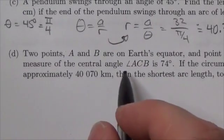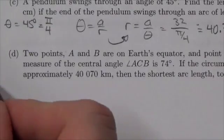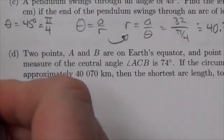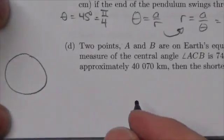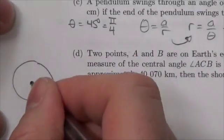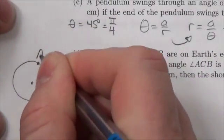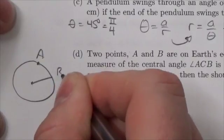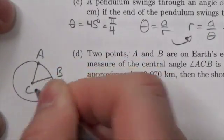Two points A and B are on the Earth's equator and point C is the center of the Earth. So what we're doing here is, if we're looking down from the top of the Earth, here's the center of the Earth and we've got the two points A out here, B, here's C.